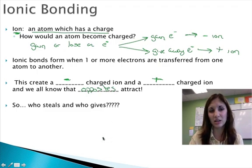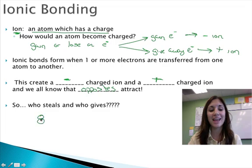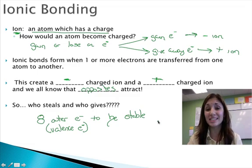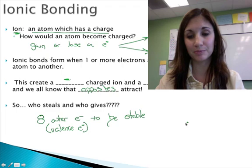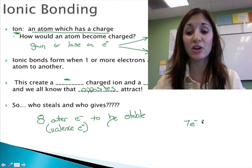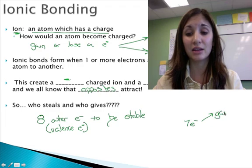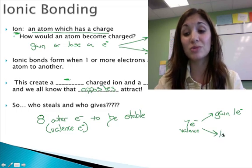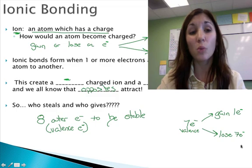So who gives and who steals? Well, if you remember that we want eight outer electrons to be stable. Another word for these outer electrons that you may come across is a valence electron. If I need eight to be stable, if I have almost eight, what's easier? If I have seven electrons, I could gain one electron to get stable. Or I could lose seven electrons to become stable. What's more likely?